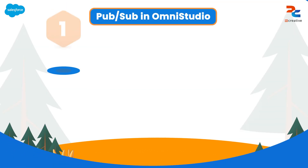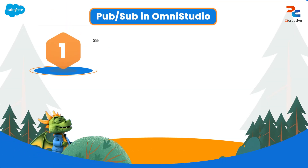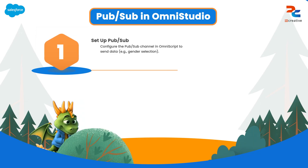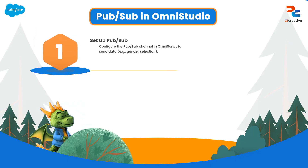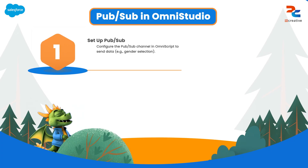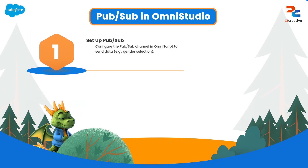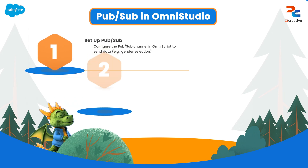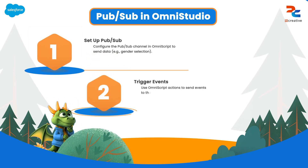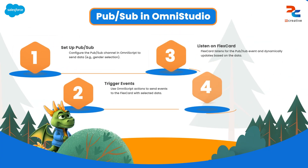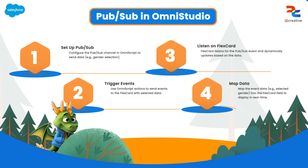Hello everyone! In this video we are diving into OmniStudio, where we will learn how to call pubsub from an OmniScript and have a FlexCard listen for real-time events. We will break this down into three main steps: first, set up a pubsub channel on OmniScript; second, call that pubsub channel from OmniScript; and third, listen to that channel on the FlexCard and display whatever we send from OmniScript.